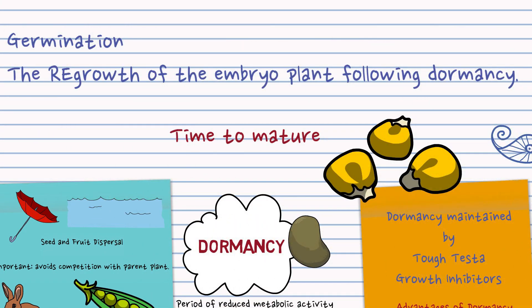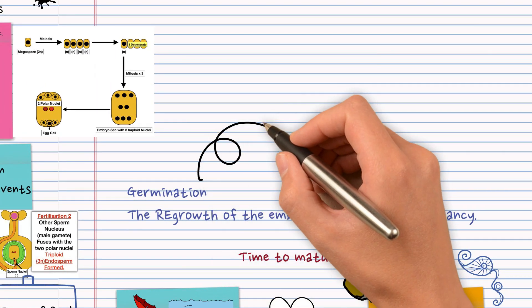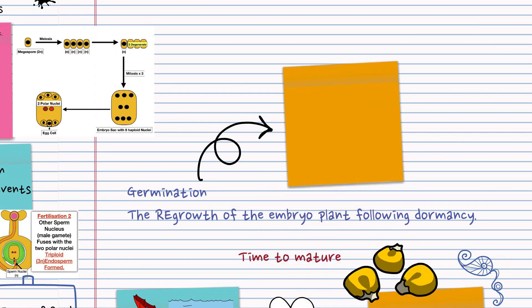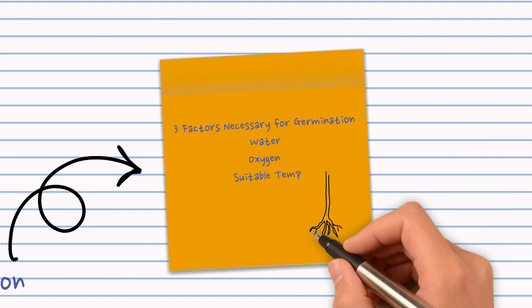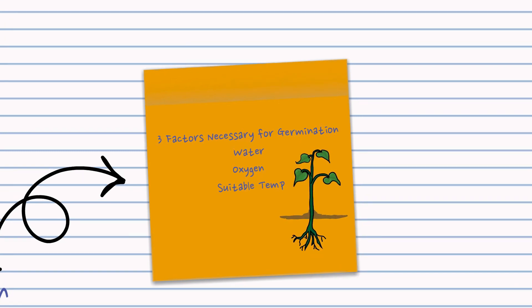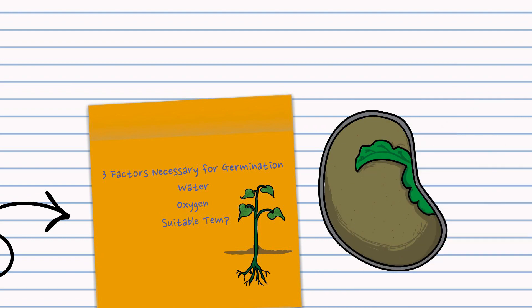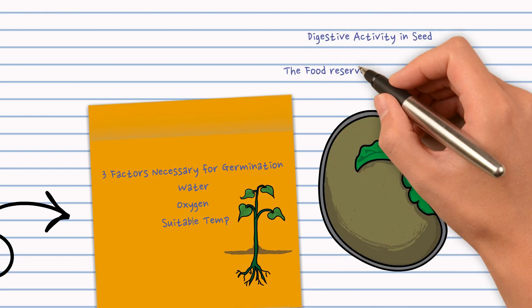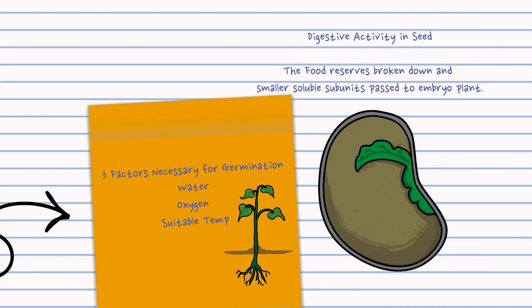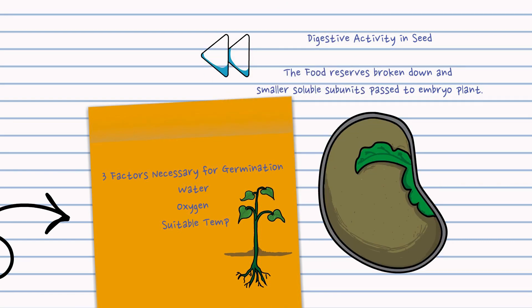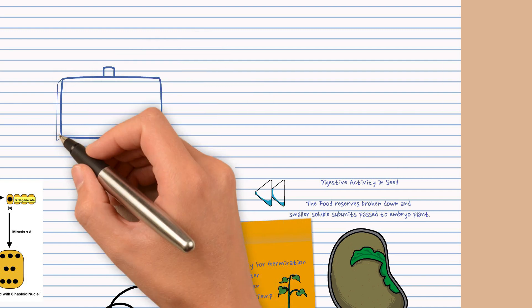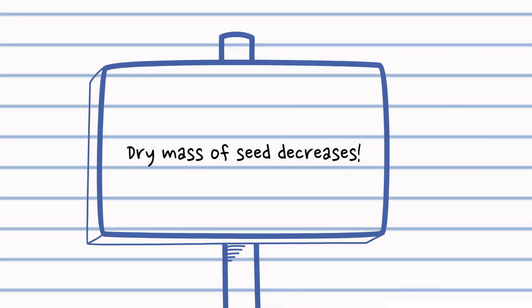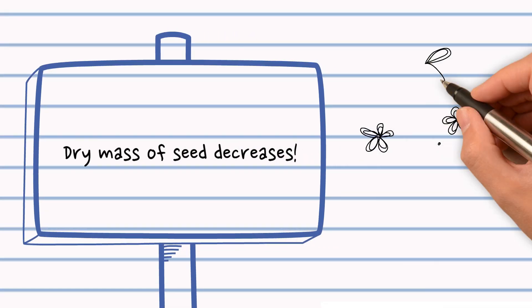So following dormancy is germination, the regrowth of the embryo plant following dormancy and you need three factors: water, oxygen and a suitable temperature, and you must know why you need each one. Germinating seeds require a lot of energy and raw materials so food reserves must be broken down. There has to be digestive activity in the seed and so there must be a lot of respiration going on as well. So one of the questions you're often asked is why does the dry mass of the seed decrease? It's usually down to respiration.